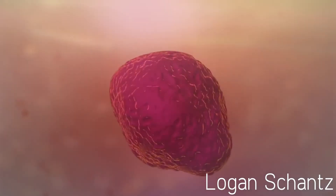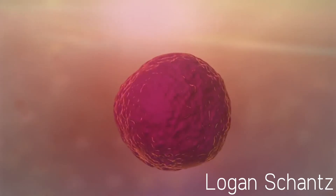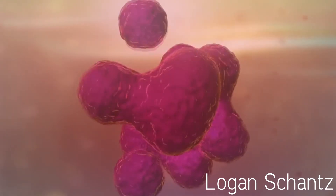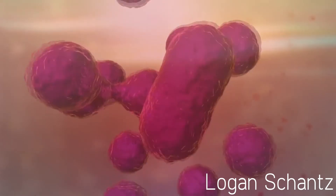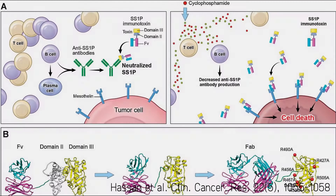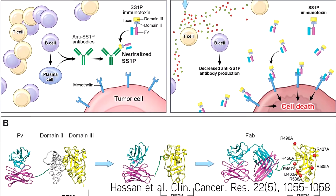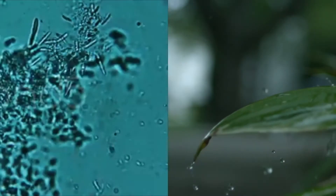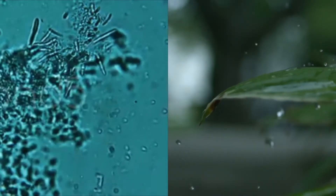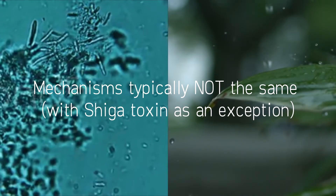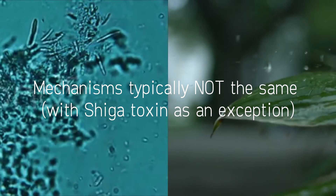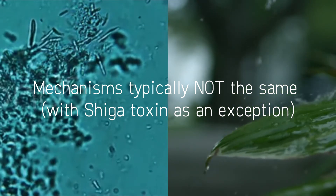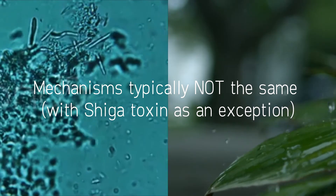Many studies have suggested that RIPs can induce cell apoptosis, or controlled cell death, as compared to necrosis. Using these observations, RIPs have been implicated in cancer therapy as targeting agents for proliferating cells. Although RIPs occur in both plants and microbes, the two do not usually have identical mechanisms for ribosome inactivation, with the Shiga toxin being an exception, as it behaves identically to plant RIPs.